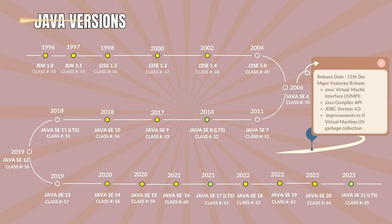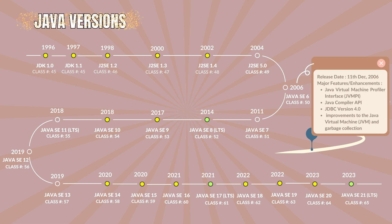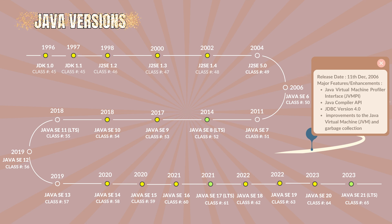Java 6.0 with the class file version 50. It was codenamed as Mustang. It was released on 11th December 2006. The major features and enhancements are the Java Virtual Machine Profiler Interface and Java Compiler API.